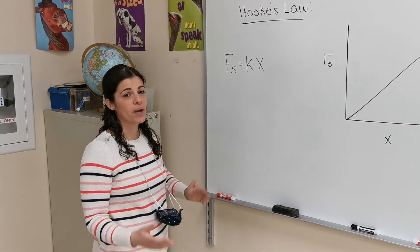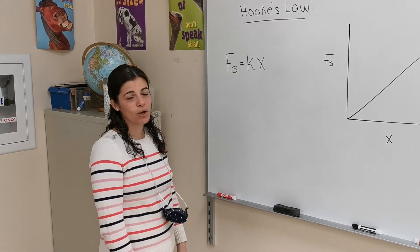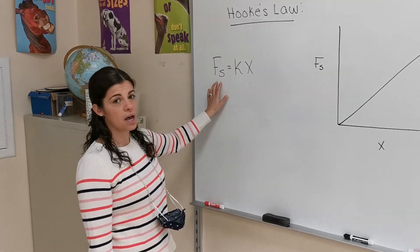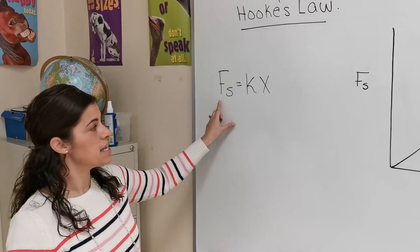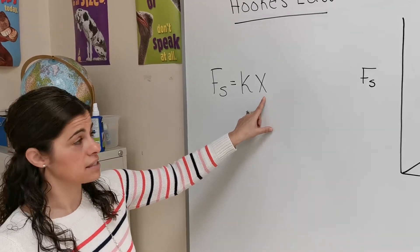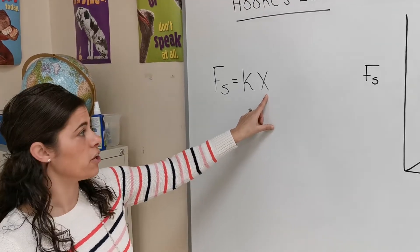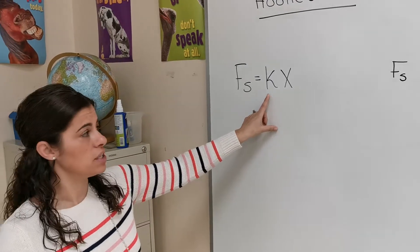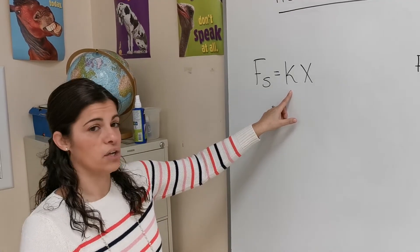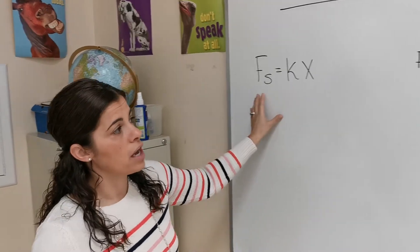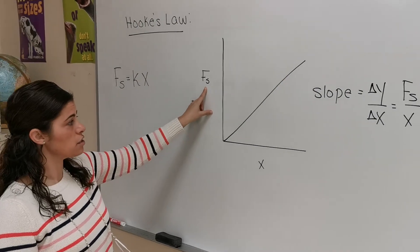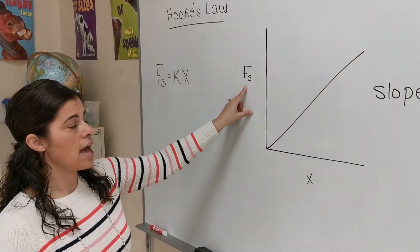Today we're going to be doing a lab using Hooke's Law. Hooke's Law says that the force on a spring, which is Fx, is directly related to the elongation of the spring, which is the x in our equation. The k in our equation is the spring constant, and that's what we're going to be solving for when we obtain our data. We're going to use a graph with our force on the spring on the y-axis.